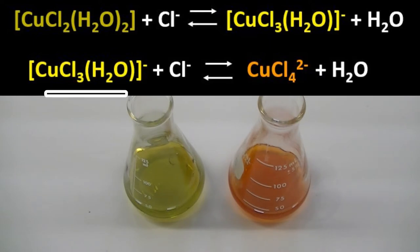Further, the yellow trichloro-species reacts with chloride ion to form an orange tetrachloro-copper-2 ion. Both these equilibria are driven to the right by the increased chloride ion concentration from the addition of salt.